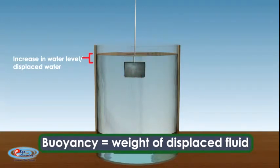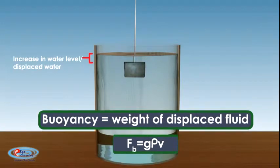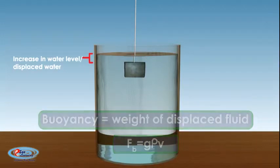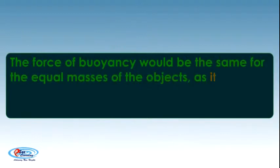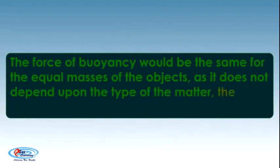Buoyancy equals weight of displaced fluid. F_b equals g times density times V. The force of buoyancy would be the same for equal masses of the objects, as it does not depend upon the type of matter the object is made of.